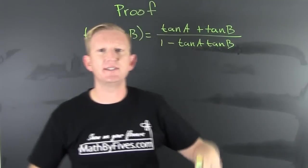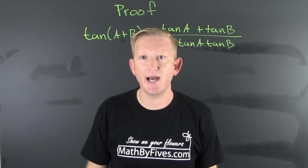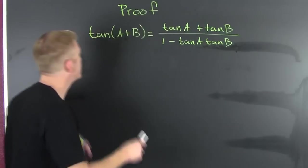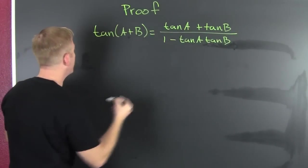Normally when we're proving these identities, we start with the more difficult side and we show the nicer side. This time we are going to start with the nicer side and show the more difficult side.